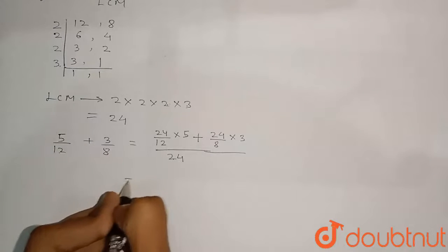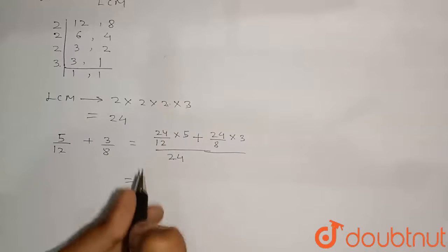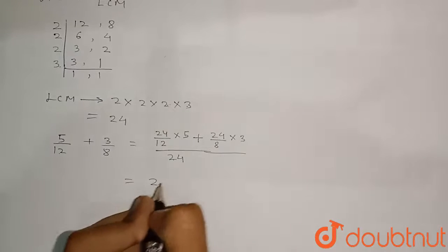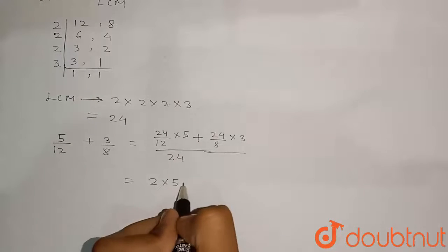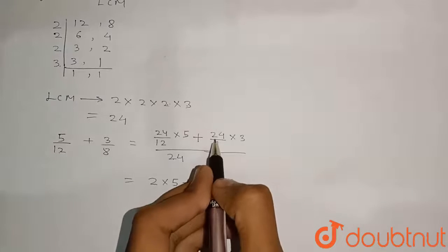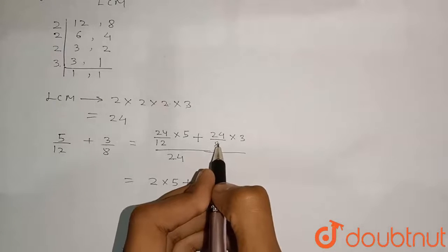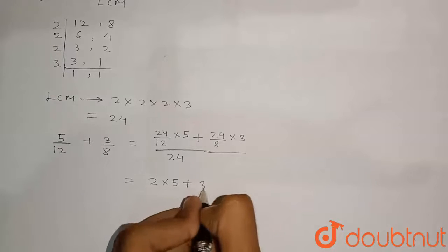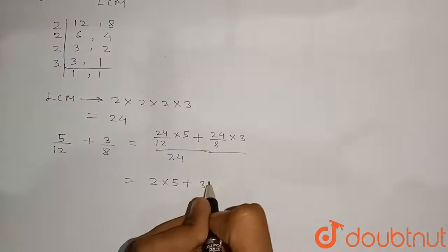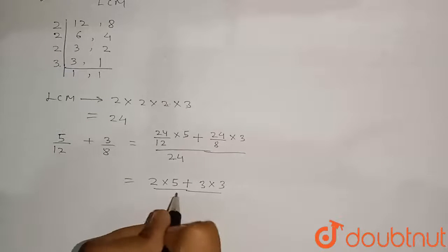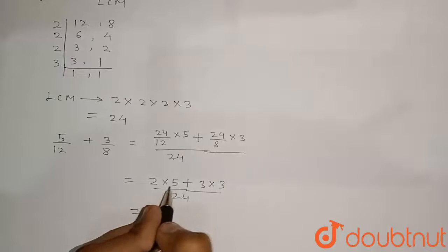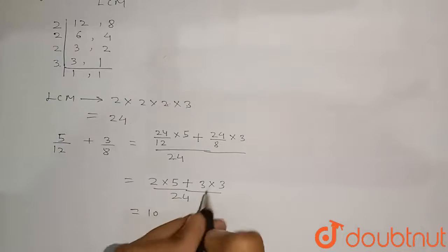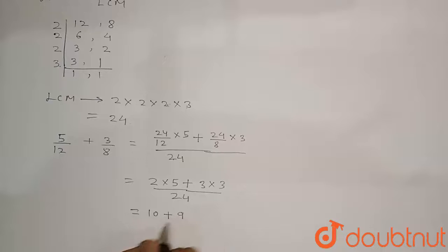Simplifying: 24 divided by 12 equals 2, and 2 multiplied by 5 equals 10. Then 24 divided by 8 equals 3, and 3 multiplied by 3 equals 9. So the numerator becomes 10 + 9, with 24 in the denominator.